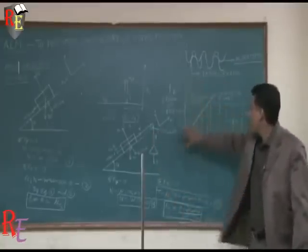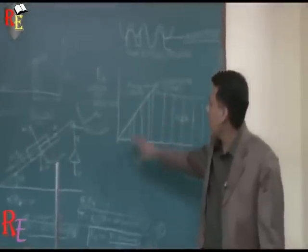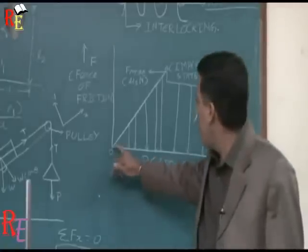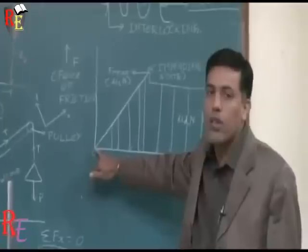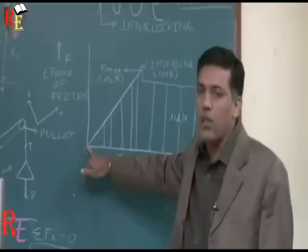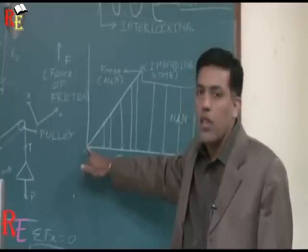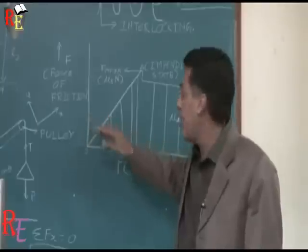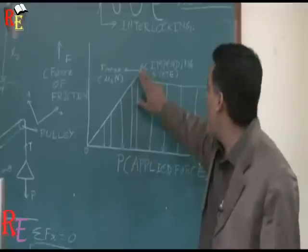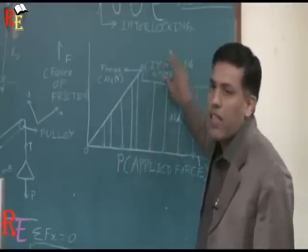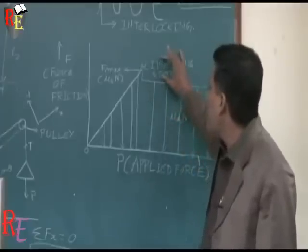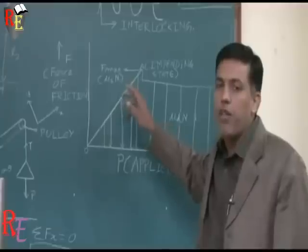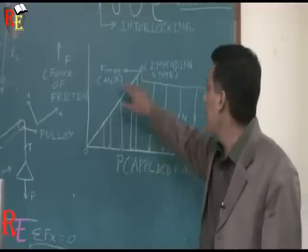The graph has force of friction on the y-axis and applied force on the x-axis. The graph starts from point O, where the applied force is zero and friction is also zero. As the applied force increases, the friction also increases up to point A, known as the impending state. At the impending state, the friction reaches its maximum value μsN, where μs is the coefficient of static friction and N is the normal reaction.